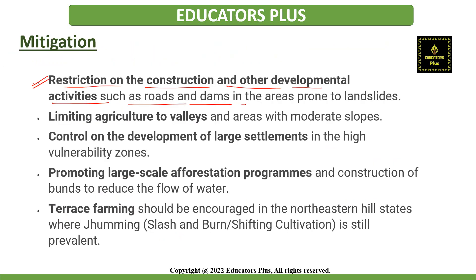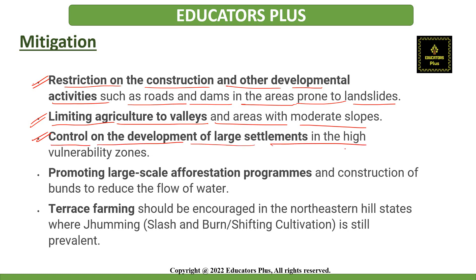Regarding mitigation, it involves restrictions on construction and other developmental activities such as roads and dams in areas prone to landslides. It also includes limiting agriculture to valleys and areas with moderate slopes, and control on the development of large settlements in high-vulnerability zones. We can also mitigate by promoting large-scale afforestation programs, planting more trees, and construction of bunds to reduce the flow of water.